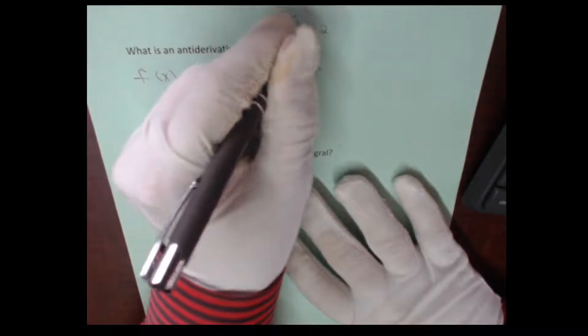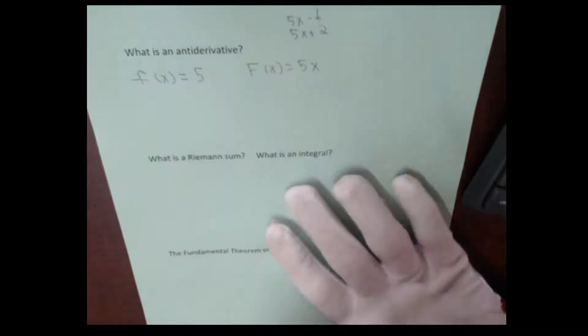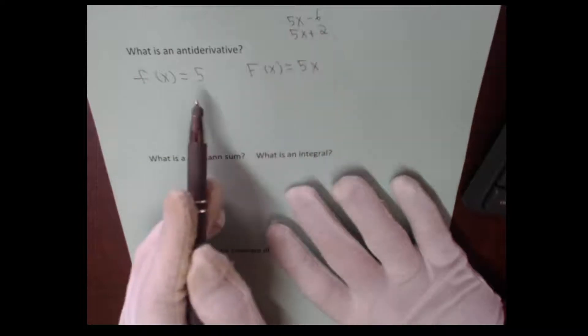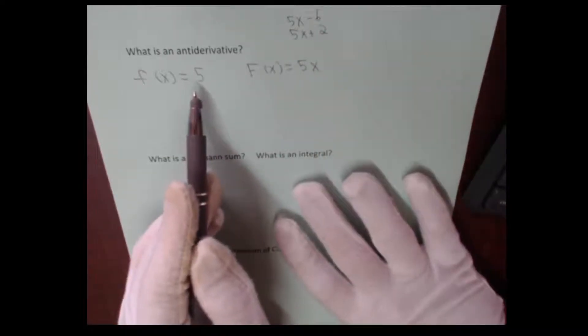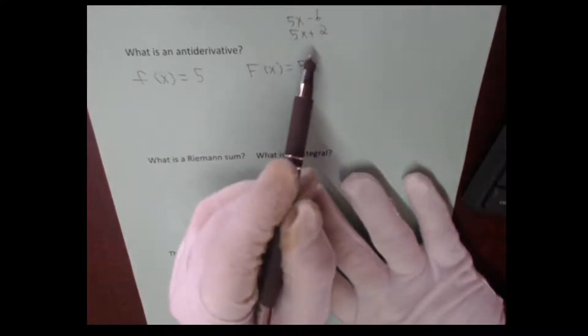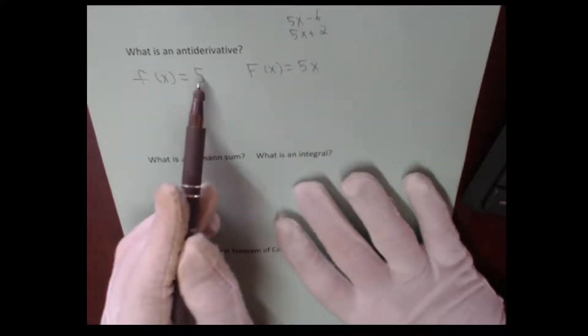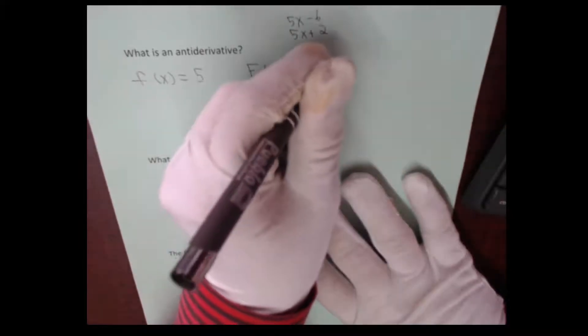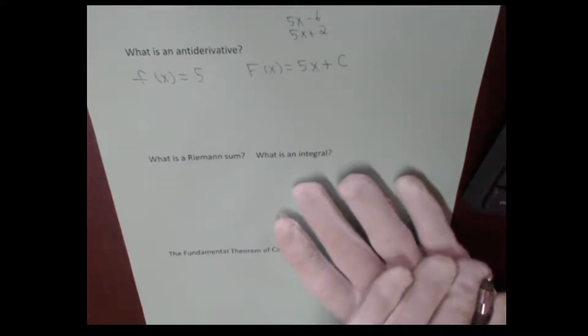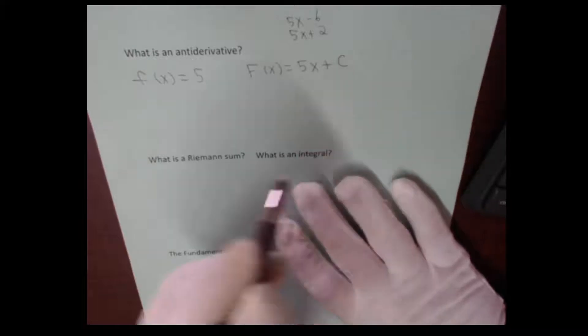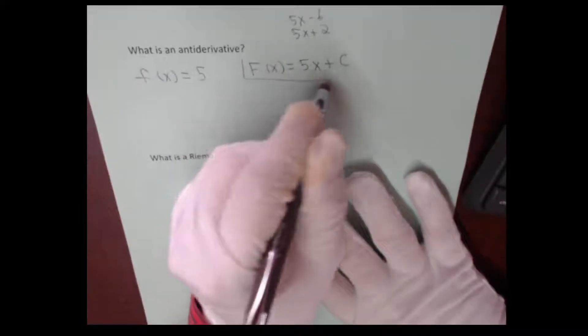Or how about 5x - 6? That's also equal to 5. So there's an infinite number of equations. However, all of them only have a constant either being added or subtracted from it. The core is the 5x whose derivative is 5. So what we say to acknowledge this is we say that the antiderivative is 5x + c, where c is any real number.